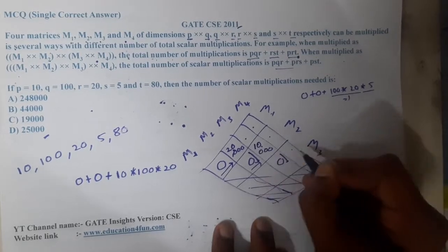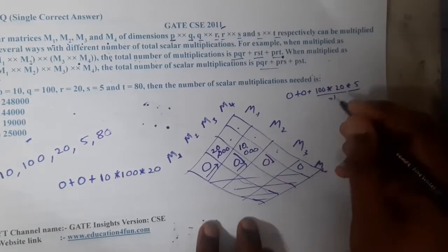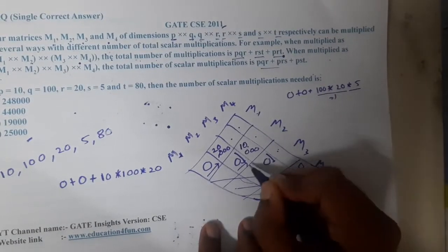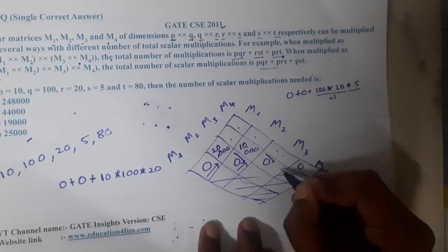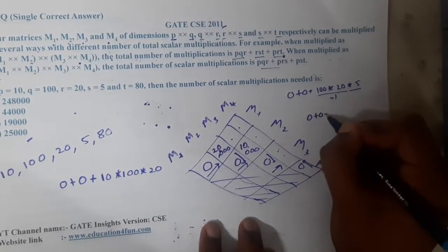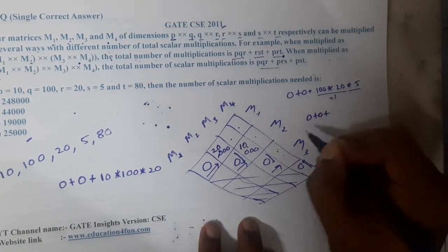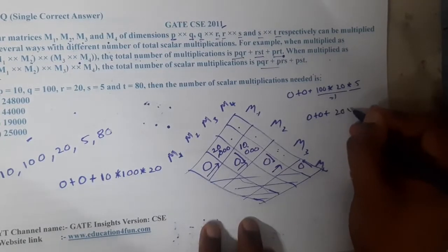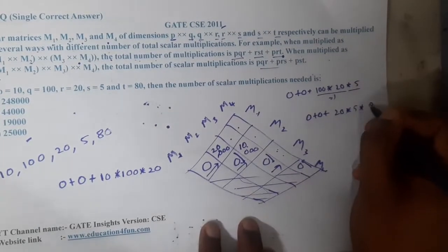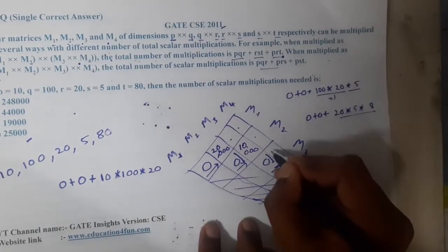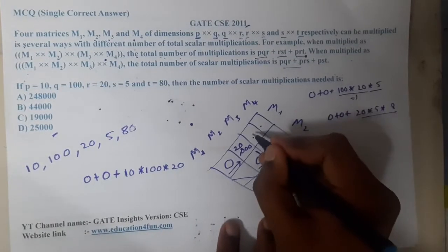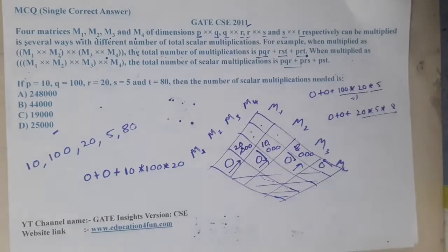For M(3,4): the values are 20, 5, 80. So 20×5×80 = 8,000. The value at that position is 8,000.